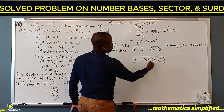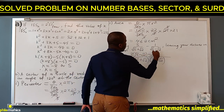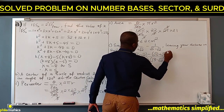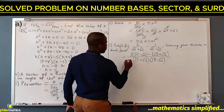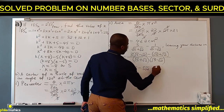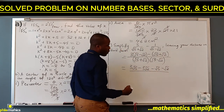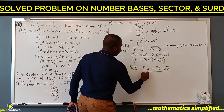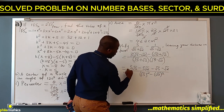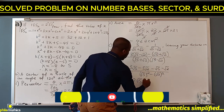Cross-multiplying: the first fraction gives 3(root 5 minus root 2) and the second gives minus 1 times (root 5 plus root 2). Expanding the numerator: 3 root 5 minus 3 root 2 minus root 5 minus root 2. The denominator is the difference of two squares: (root 5)squared minus (root 2)squared equals 5 minus 2 equals 3.